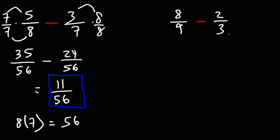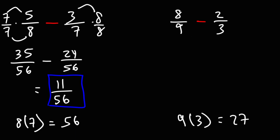Now for the next one, a common denominator we could use is 9 times 3, which is 27. But notice that 3 goes into 9, so 9 itself will be a common denominator for 9 and 3. You could use 27 or you could use 9 — you'll get the same answer. But if you use 27, because it's not the least common denominator, you'll have to simplify your answer.